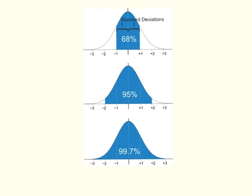Within one standard deviation on either side of the mean, in a normal distribution, lie 68% of the data. Between two standard deviations lies 95% of the data. And between three standard deviations below and above the mean lie 99.7% of the data.